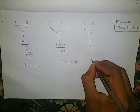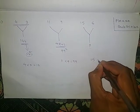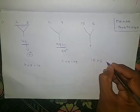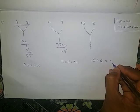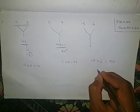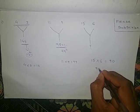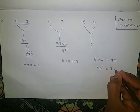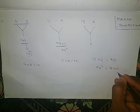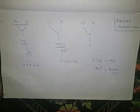The same way here also: 15 into 6 is 90. 90 squared is 8100. So the missing number is 8100.